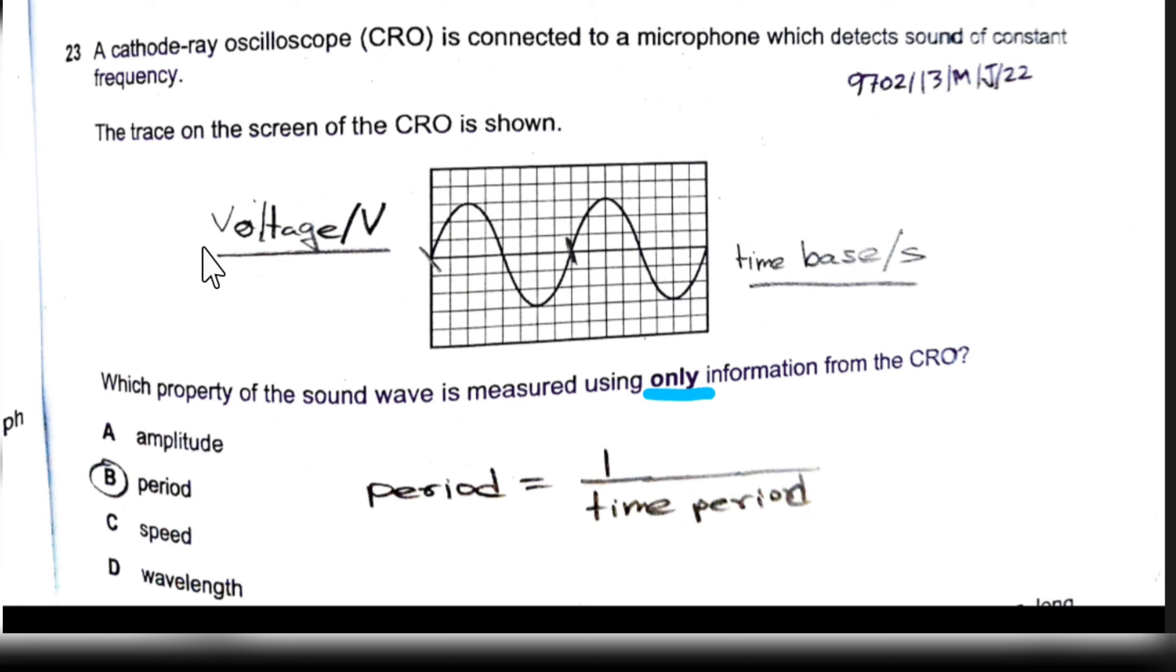For the CRO we have to remember that on the x-axis we represent time and on the y-axis we represent voltage. So the graph would be a voltage-time graph.